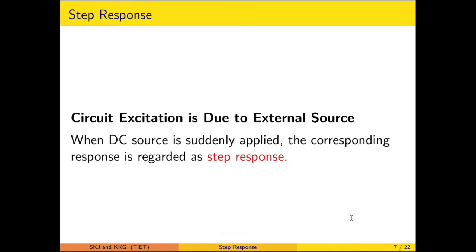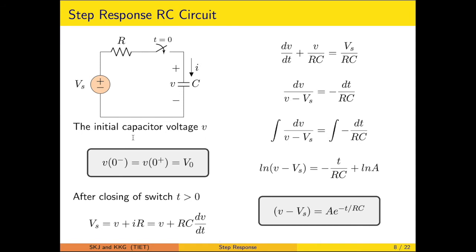Now we are in a position to discuss the step response. This situation arises when a DC source is suddenly applied. As an example, an RC circuit is considered where the switch is closed at time t = 0, giving rise to a current because of the external source Vs. We presume that the capacitor is initially charged to voltage V₀ due to some prior arrangement, but the focus is on the behavior after switching.